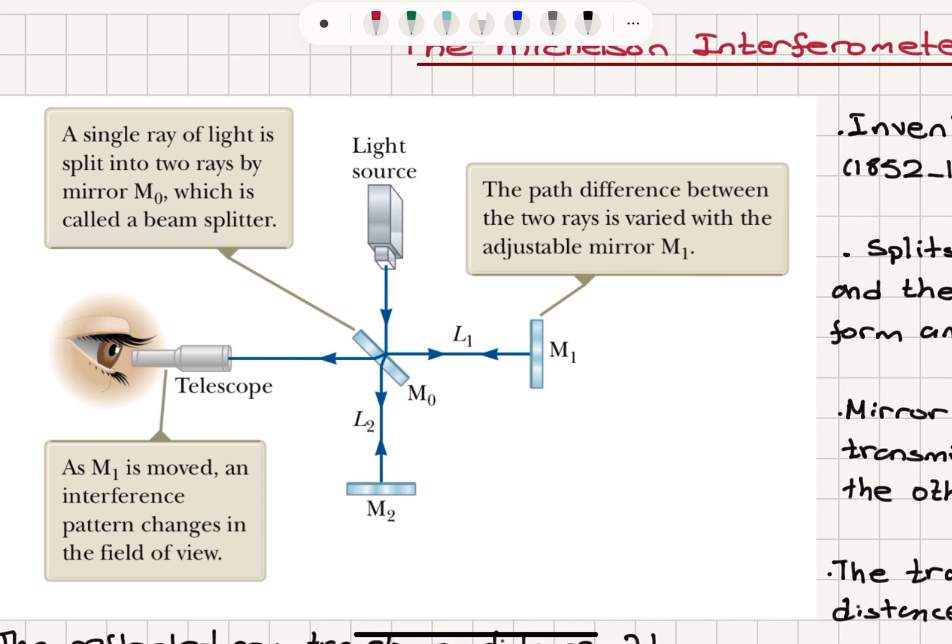So we have mirror M1. Basically, the path difference between the two rays is varied with the adjustable mirror M1. So mirror M1 location is varied.